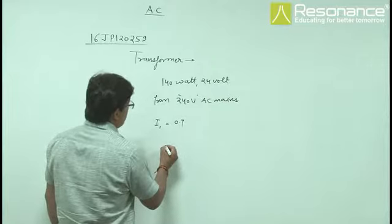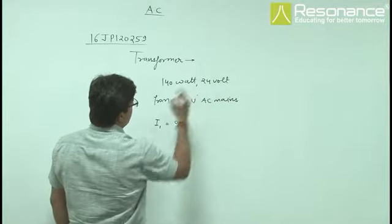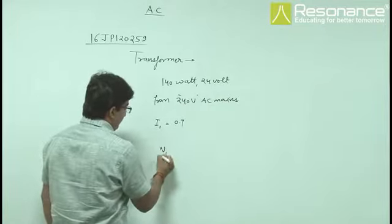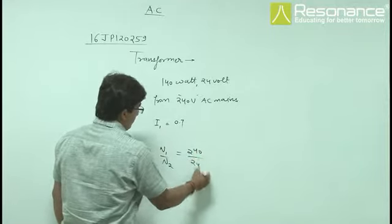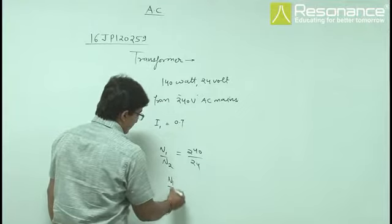So 240 and 24. So N1 by N2 equals to 240 by 24. So N1 by N2 equals to 10.